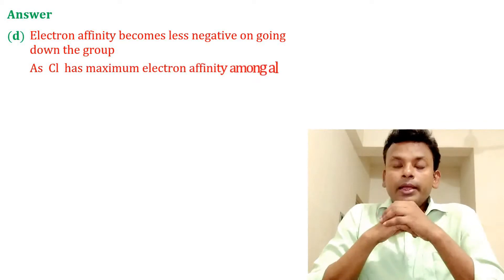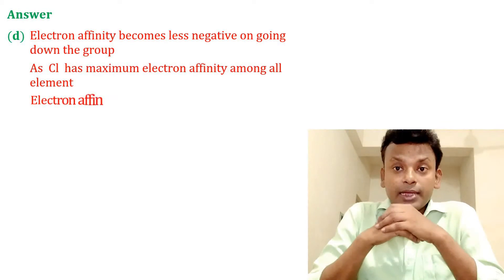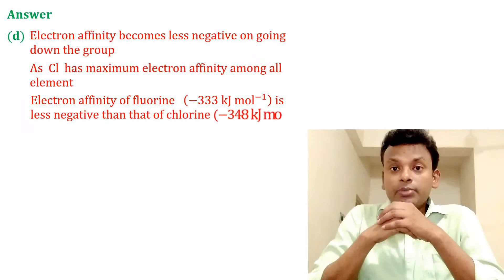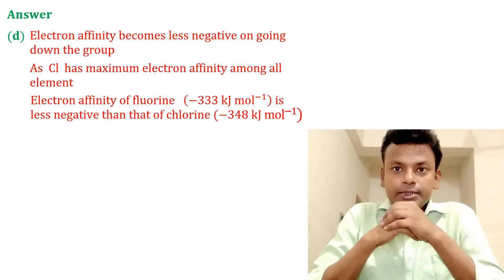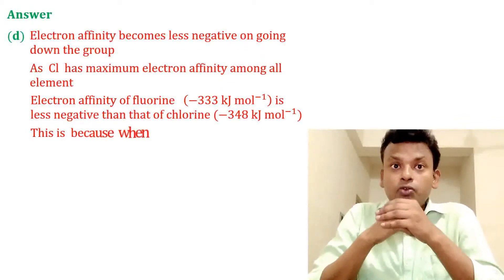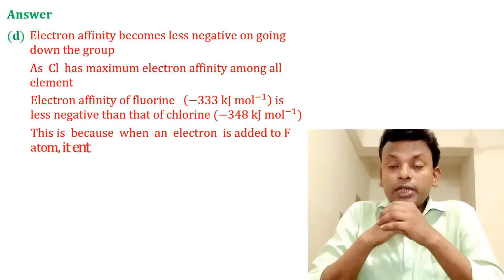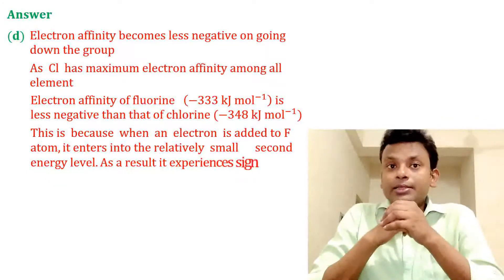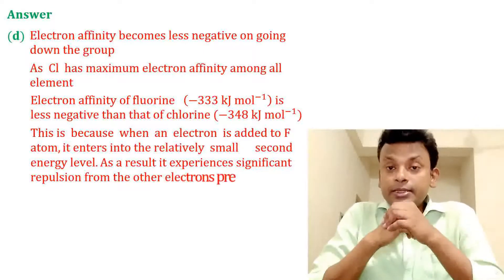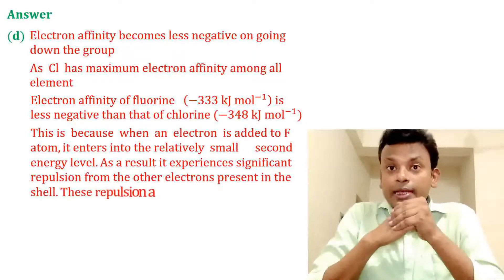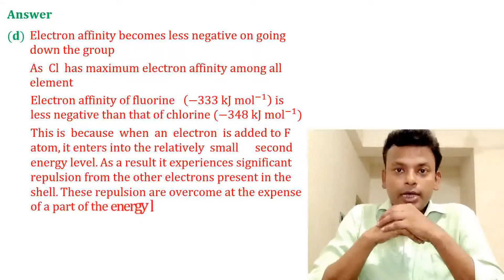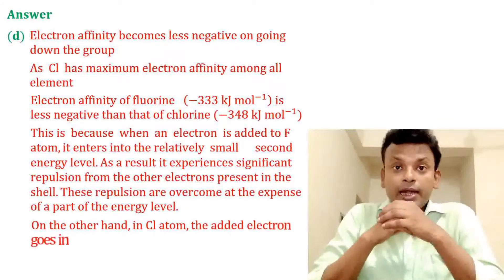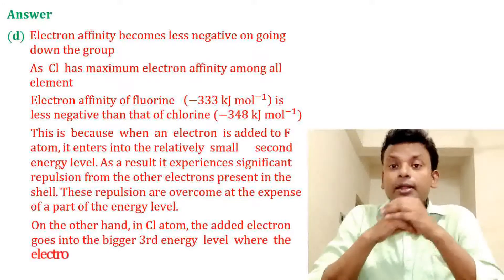The electron affinity of fluorine is −333 kJ/mol, which is less negative than that of chlorine at −348 kJ/mol. This is because when an electron is added to a fluorine atom, it enters the relatively small second energy level, experiencing significant repulsion from other electrons present in the shell. This repulsion is overcome at the expense of energy. In chlorine, the added electron goes into the bigger third energy level where electron-electron repulsion is less.